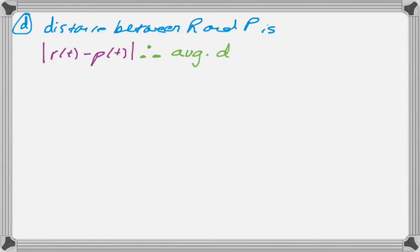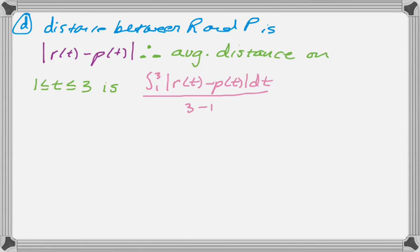Therefore, the average distance is going to be the average distance on 1 to 3 is going to be the integral divided by the interval. So it's the integral from 1 to 3, and then divide by 3 minus 1. That's the average distance between them. And we don't need to evaluate that, thankfully.